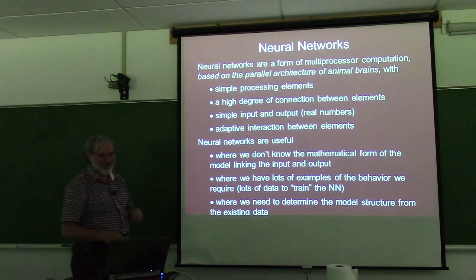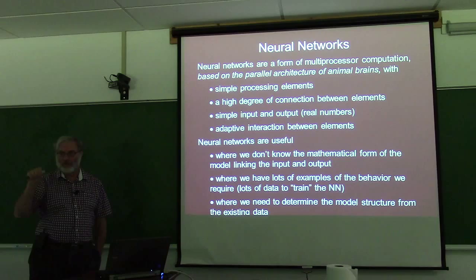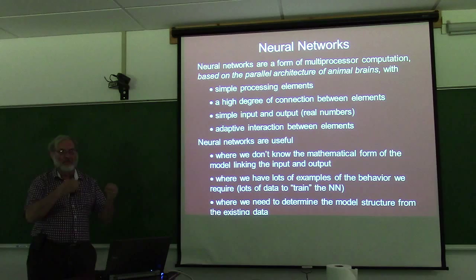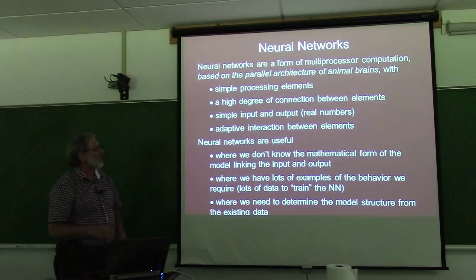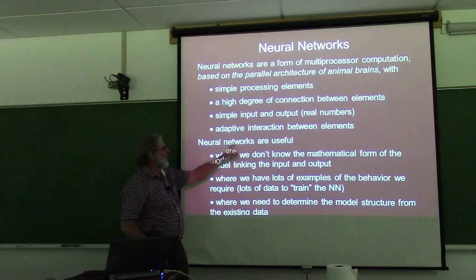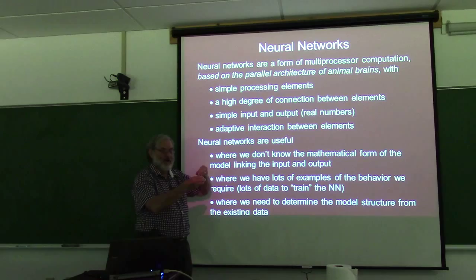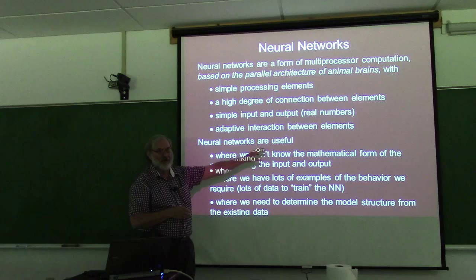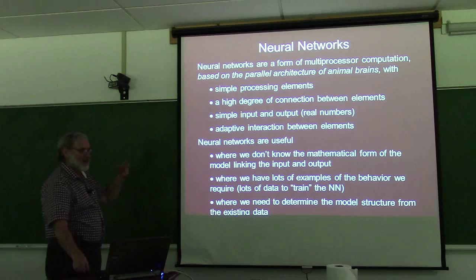With neural networks, we're going to have a whole bunch of very simple little processing elements. These little elements do something like: take some numbers, add them together, and send out another number — very simple. All of these processing elements are connected with each other, with simple inputs and outputs. Most importantly, as we train the neural network, these elements can learn on their own which inputs are important and which are not — what's called adaptive interaction. We train the neural network and let it figure out how to map inputs to the desired output.